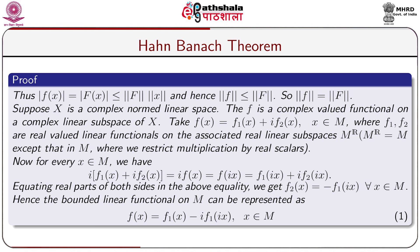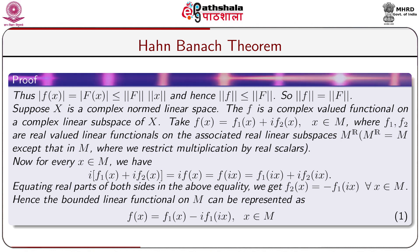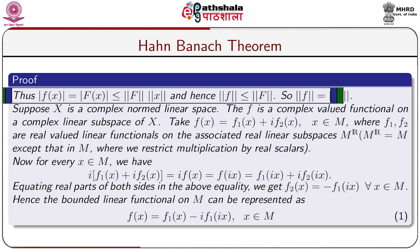Since |f(x)| ≤ P(x) for all x in M, by the Hahn-Banach lemma already proved, we get a linear functional F over X which is an extension of f over M such that F(x) ≤ P(x) = ‖f‖·‖x‖ for all x in X. This shows F is a bounded linear functional on X. Also, ‖F‖ ≤ ‖f‖. Since F is an extension of f, |f(x)| = |F(x)| ≤ ‖F‖·‖x‖ for all x in M, which gives ‖f‖ ≤ ‖F‖. Consequently, ‖f‖ = ‖F‖.